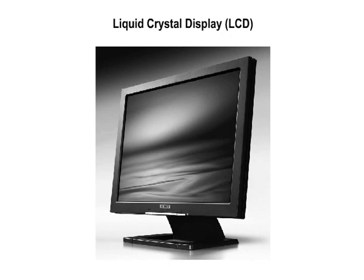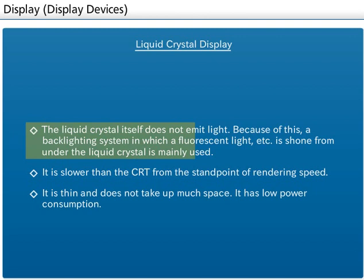Liquid Crystal Displays: The molecular structure changes in accordance with voltage in this device. The display device with a jelly-like material put in between glass plates, called crystal, that changes the degree of transparency of light is a Liquid Crystal Display. The liquid crystal itself does not emit light. Because of this, a backlighting system in which a fluorescent light is shone from under the liquid crystal is mainly used.